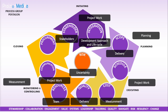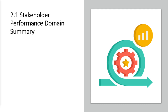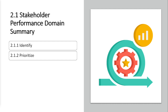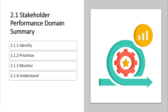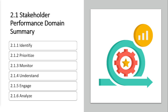Let's examine the eight domains in more detail. Domain one, the stakeholder performance domain: you've got to identify your stakeholders. Prioritize your stakeholder focus, monitor engagement, and continually work on understanding stakeholder needs as you engage them. Analyze your stakeholders continually.